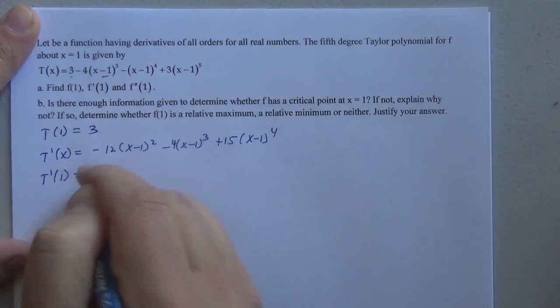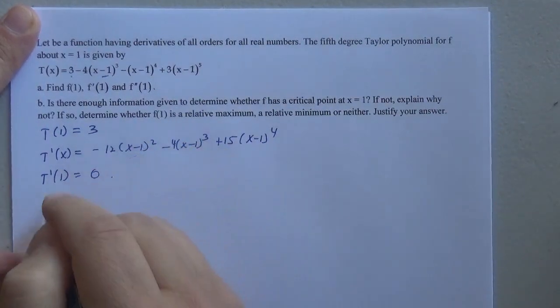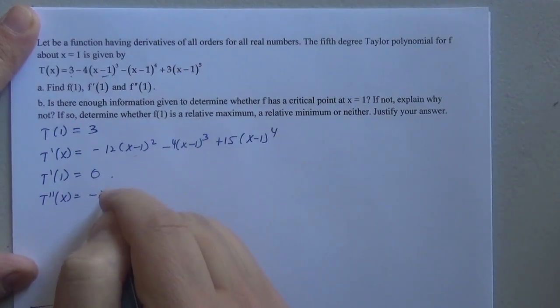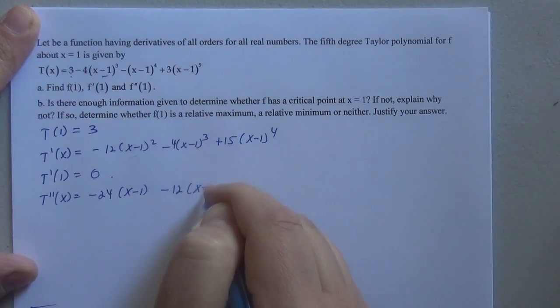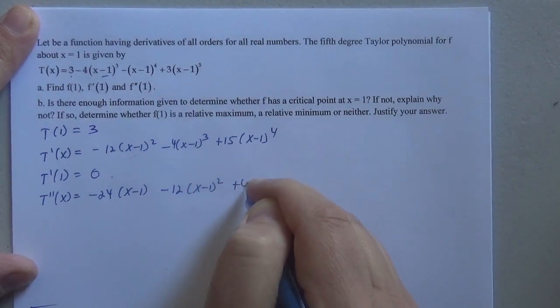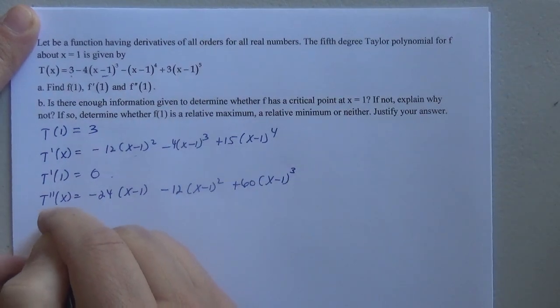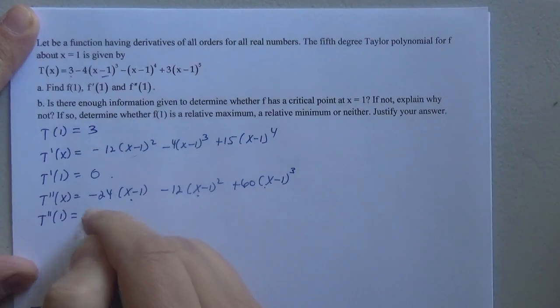t prime of 1, well, all these terms go to 0, so therefore that's good. t double prime of x is going to be negative 24(x minus 1) minus 12(x minus 1) squared plus 60(x minus 1) cubed. t double prime of 1 is 0, so this is 0.